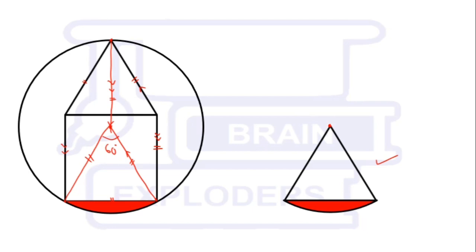So the area of the shaded region is equal to the area of the pie slice minus the area of the equilateral triangle.